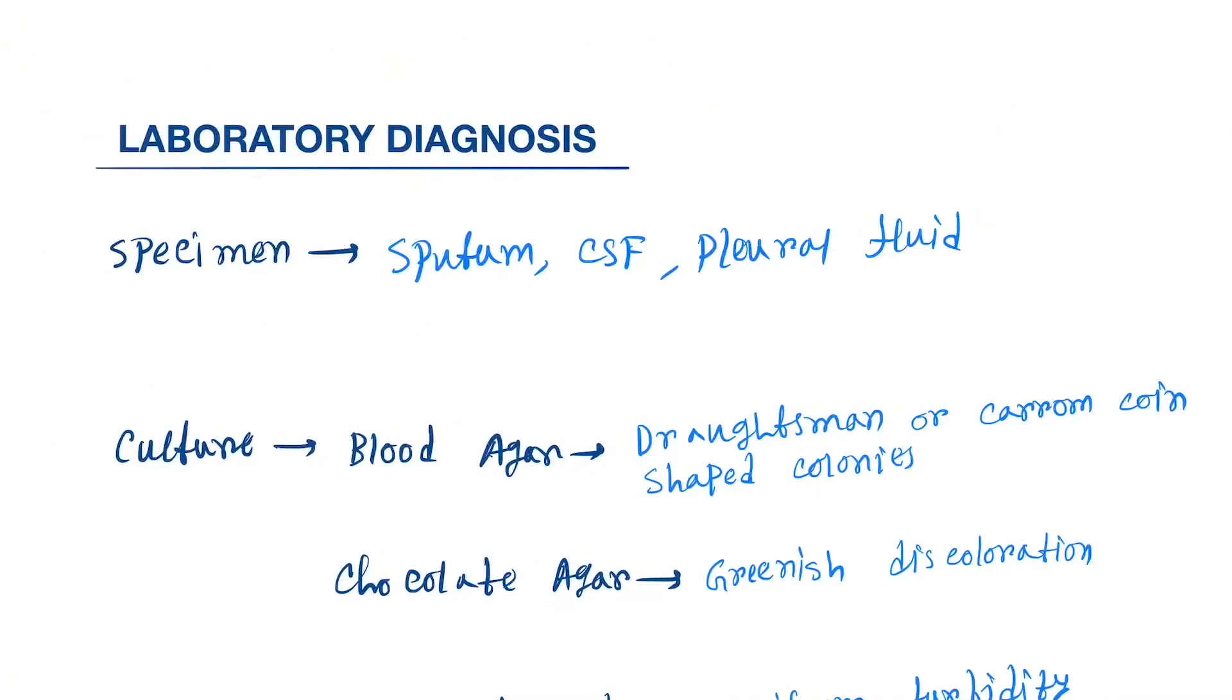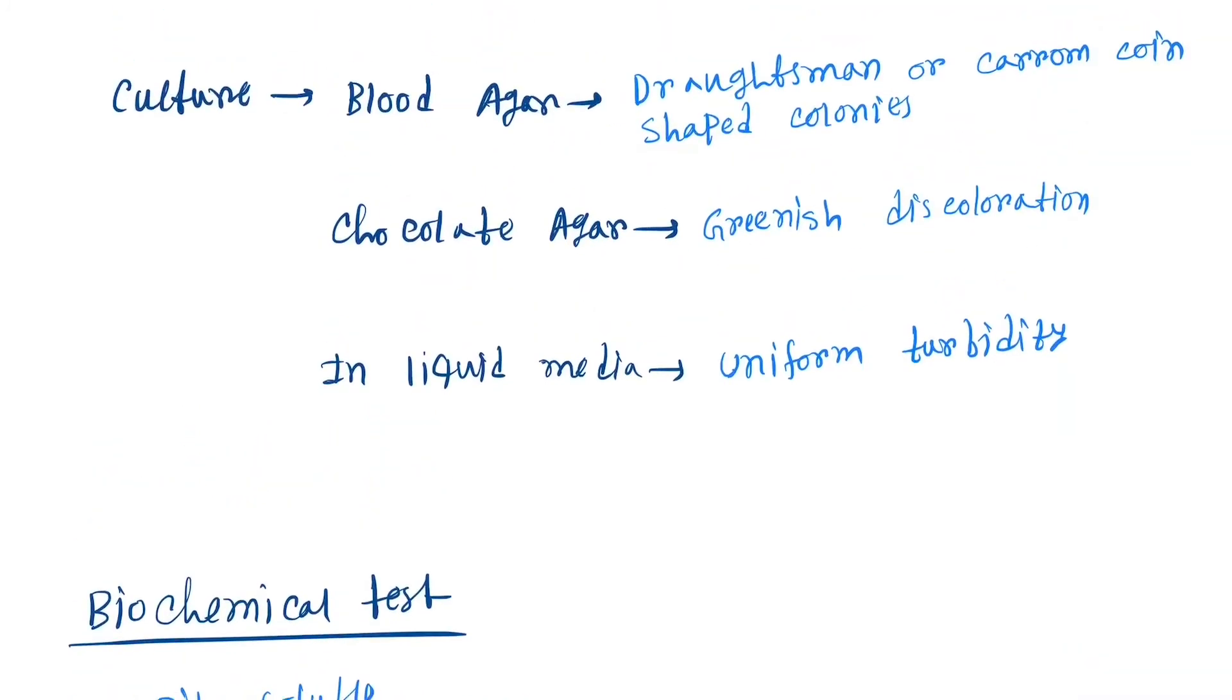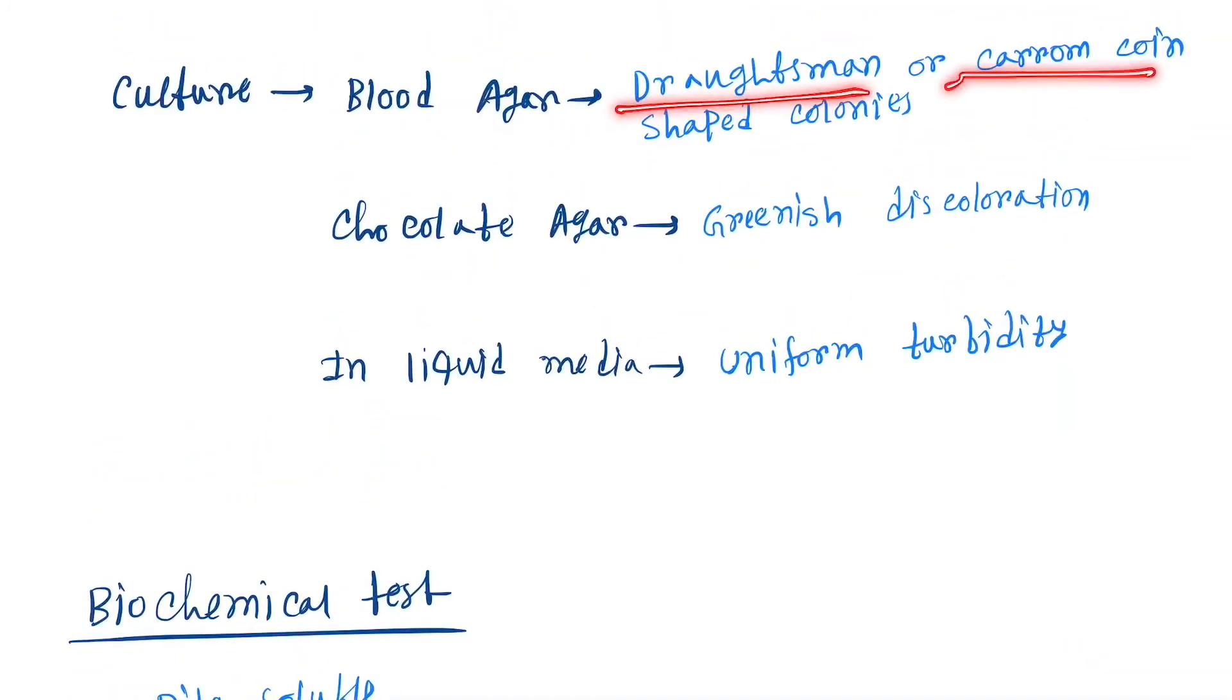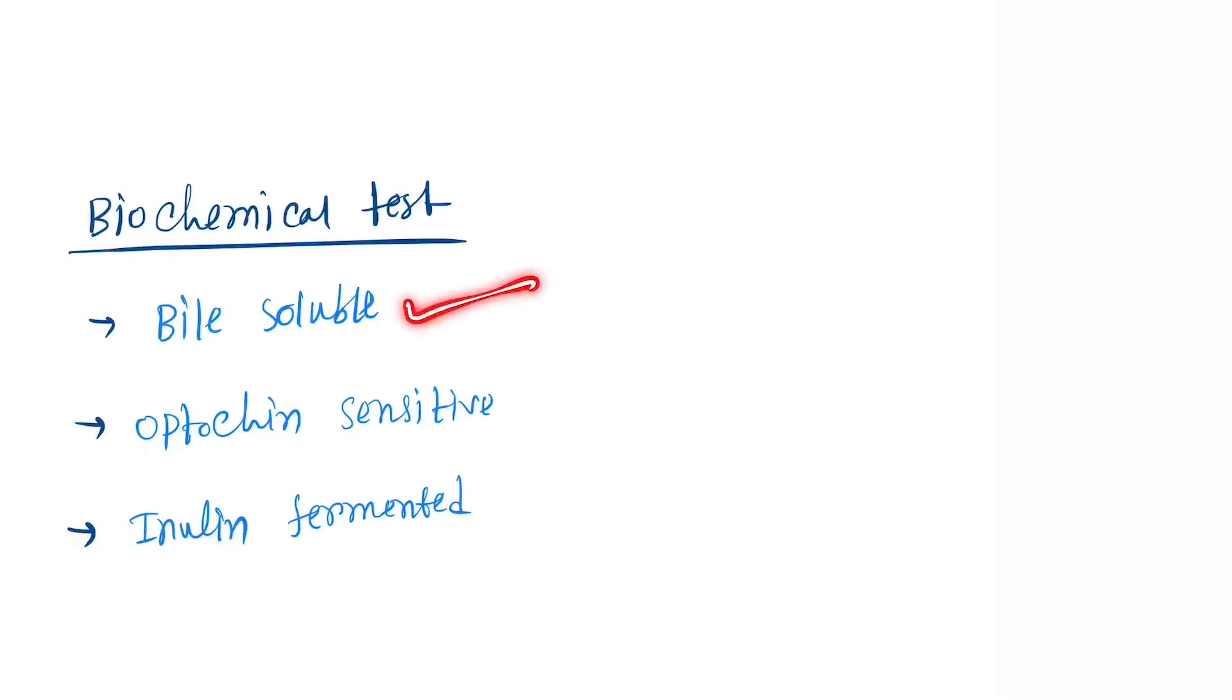Now come to the lab diagnosis. Here specimen is sputum, pleural fluid. Culture in blood agar produces mucoid separate colonies, chocolate agar shows greenish discoloration, in liquid media uniform turbidity. Biochemical tests: they are bile soluble, optochin sensitive, and inulin fermented.